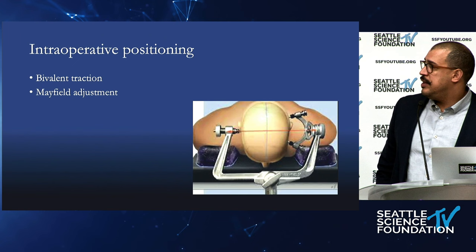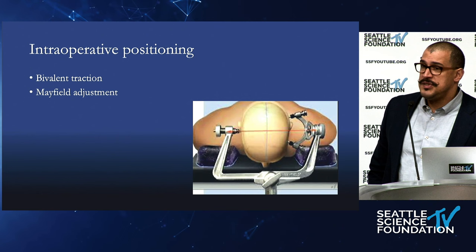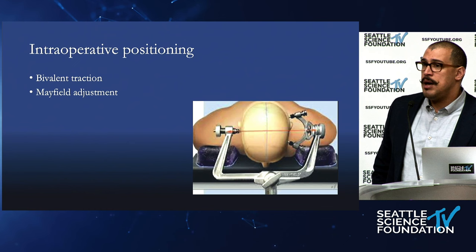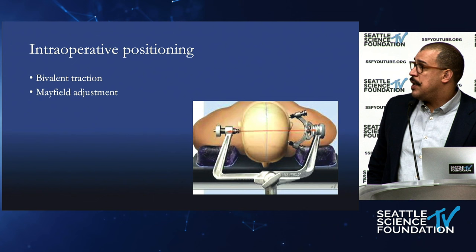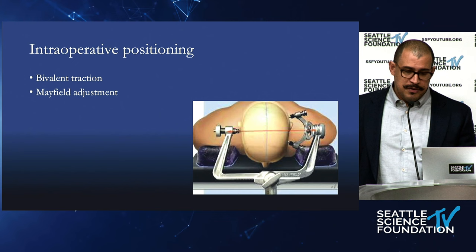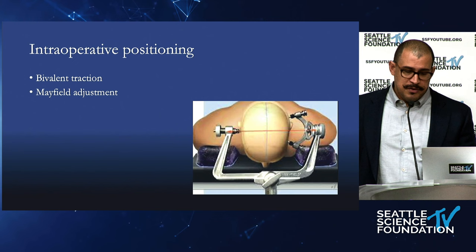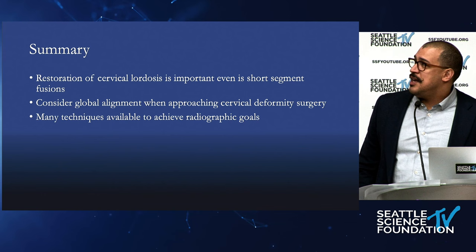The same can be done with the Mayfield, but that does require the fellow or attending to scrub out. After releases, you can scrub out and lift the patient's head into a better position. The dual-vector traction technique is easier and more powerful — but it requires trusting the person working with you to make the head movement or confirming enough movement by looking into the surgical field. When you put those posterior rods in and lock everything into place, you've gotten as much correction as you would like.